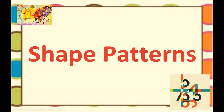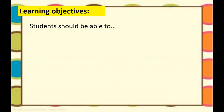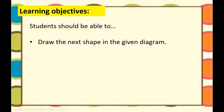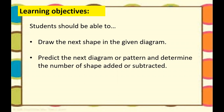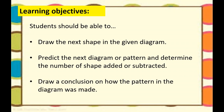How are we going to find the number sequence — the next terms? You need to find the rule. Once you know the rule, then you can complete that sequence. This time you're going to use shapes, shape patterns or diagrams to make a sequence. Let's see our learning objectives: draw the next shape in the given diagram or pattern; predict the next diagram or pattern and determine the number of shapes added or subtracted; and also draw a conclusion on how the pattern and diagram was made.